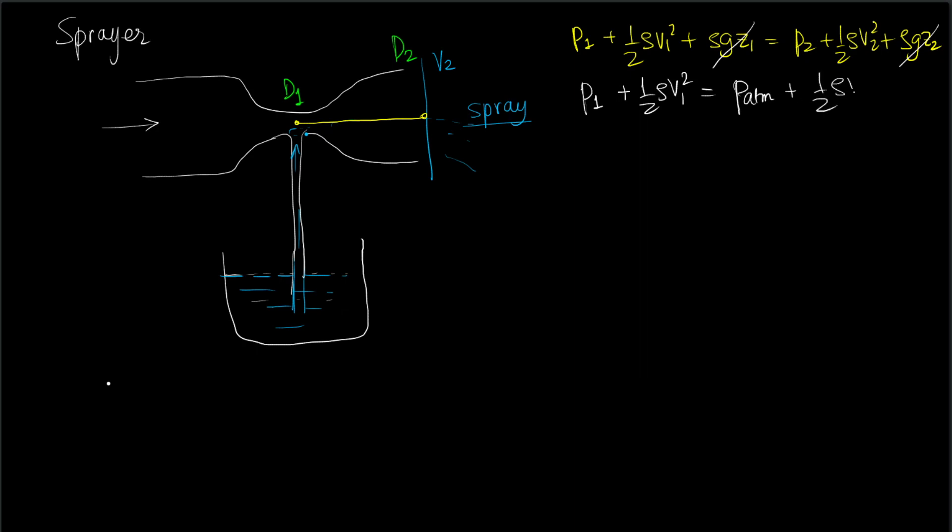By means of continuity equation we can relate the velocity and area over this section and the velocity and area at this section. Therefore v1d1² = v2d2², where I am obviously canceling out the common factor for a circular cross section, that is π/4, from both sides.